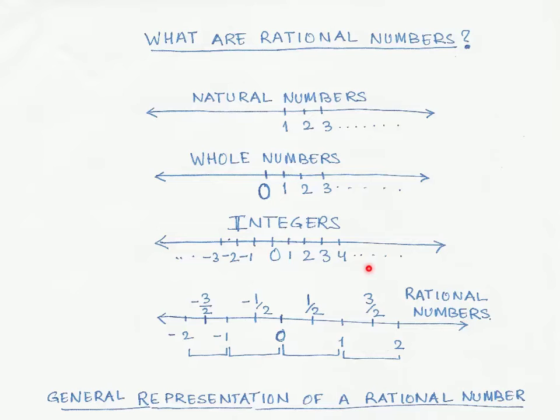You can see here that we have this number line where initially we had 0, 1, and 2. What we've done is divided the distance between 0 and 1 into half, and we use the number one-half to represent this point on the number line.